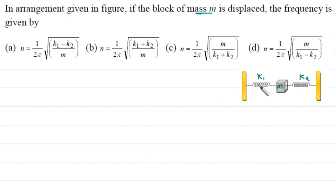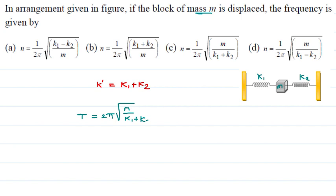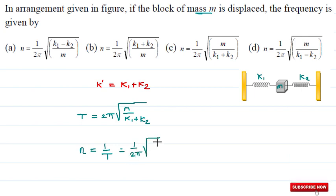Since springs are in parallel combination, the effective force constant equals k1 plus k2. The time period formula gives T equals 2π under root of m upon (k1 plus k2). Therefore frequency f equals 1 upon 2π times under root of (k1 plus k2) upon m. Option B is the correct one.